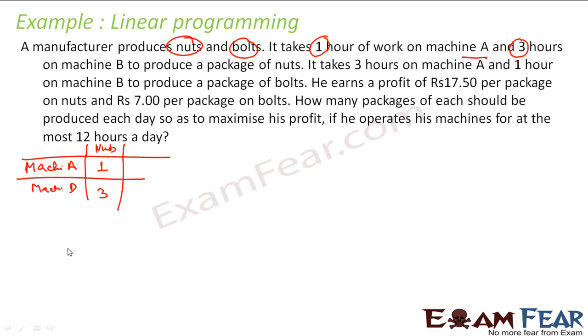For nuts, you need 1 hour of machine A and 3 hours of machine B. 3 hours of machine A and 1 hour of machine B to produce 1 packet of bolts. The profit is 17.5 rupees per package on nuts and 7 rupees per packet on bolts.